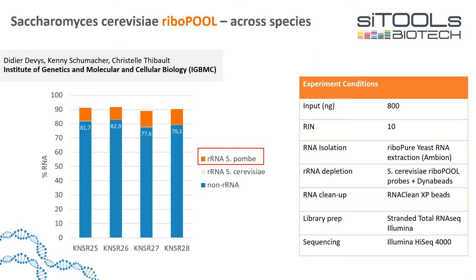A single-species Ribopool can also work on a mixture of related species. Collaborators from the IGBMC in France used a mixture of total RNA from S. pombe and S. cerevisiae — two fungi — with 800 nanograms of high-quality RNA input. Using the S. cerevisiae Ribopool to deplete rRNA from both species, only around 1% of reads mapped to S. cerevisiae ribosomal RNA and 5–8% to S. pombe ribosomal RNA across all replicates — a very successful depletion.